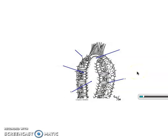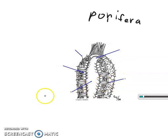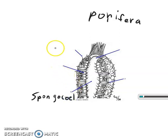This video is on the parts of a sponge. The sponge is in the phylum Porifera. These five basic parts — here we have the spongocoel, which is just the center of the sponge.